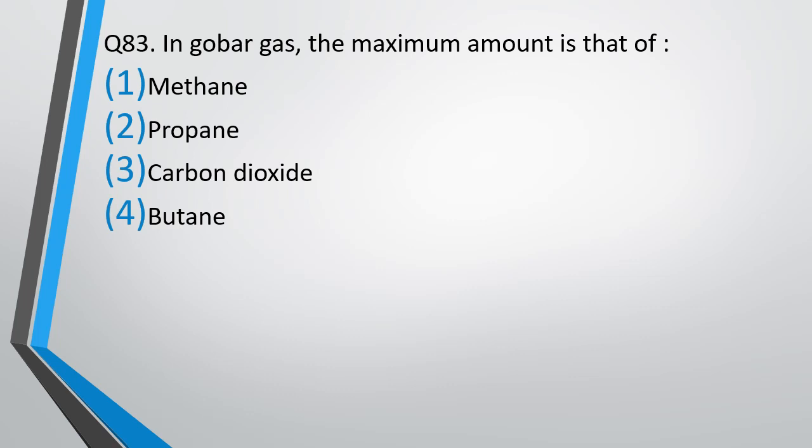Question number 83. In gobar gas, the maximum amount is that of: methane, propane, carbon dioxide, butane. Correct answer is option A, that is methane.